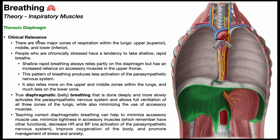There are three major zones of respiration in the lungs: an upper or superior zone, a middle or intermediate zone, and a lower or inferior zone closest to the diaphragm. The superior zone is closest to the accessory muscles, like the scalenes. People who are chronically stressed tend to take shallow, rapid breaths, lowering the percent contribution of the diaphragm and increasing reliance on accessory muscles, thereby relying more on the upper and middle zones for inhalation and less on the lower zones.